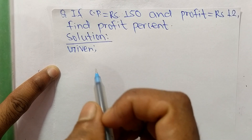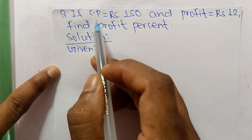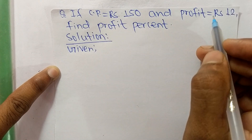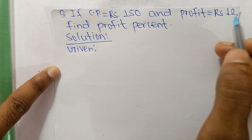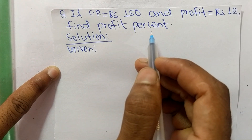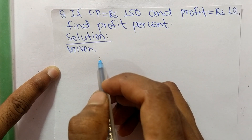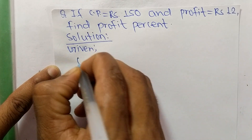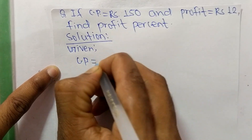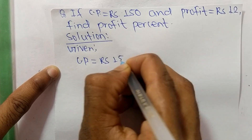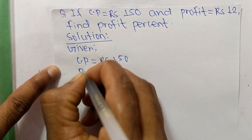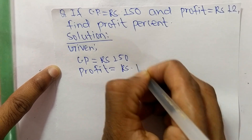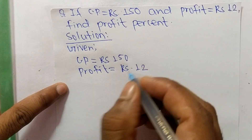Today in this video we are going to solve: if CP is equal to ₹150 and profit is equal to ₹12, find profit percent. For the solution, first we have to write what is given. Given: CP is ₹150 and profit is ₹12, and we have to find out profit percent.